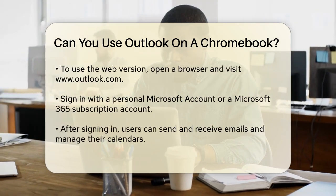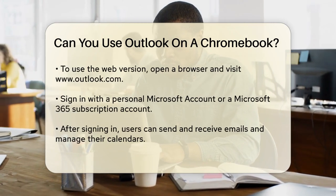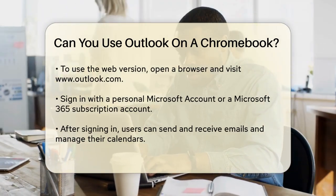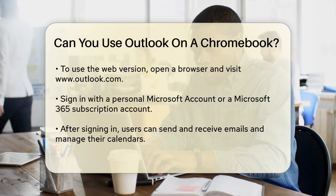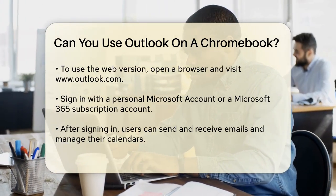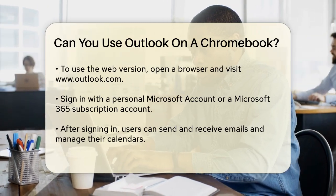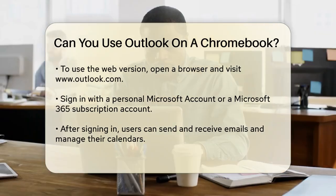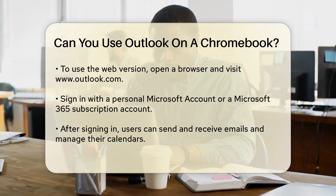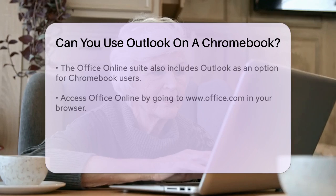One of the most straightforward methods is to use the web version of Outlook. Here's how you can do it: open your browser on your Chromebook and go to www.outlook.com. Sign in with your personal Microsoft account or the account associated with your Microsoft 365 subscription. Once you're signed in, you can send and receive emails, manage your calendar, and perform other tasks just as you would on the desktop version.